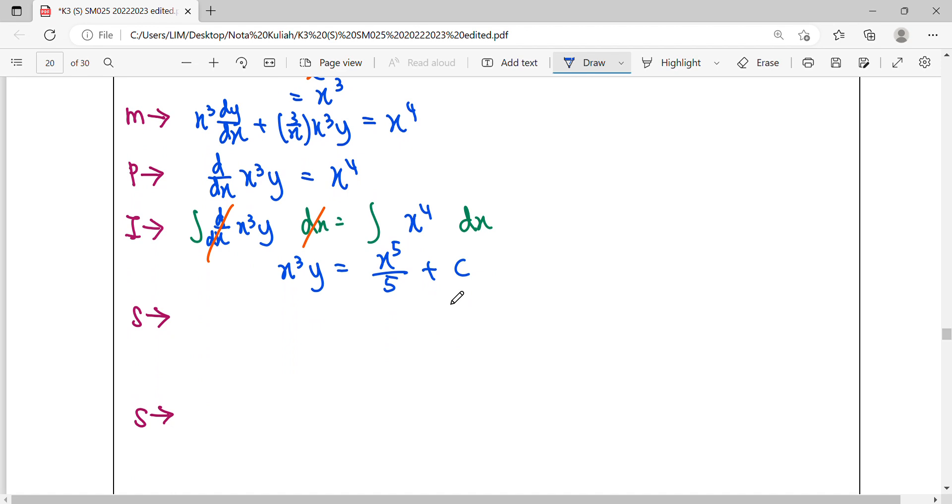Next step: simplify to get our general solution. General solution means the left-hand side is y only. Divide by x³ to get y = x²/5 + c/x³. The c remains as c/x³ because c is constant and x is unknown, so it cannot be simplified to a single constant.